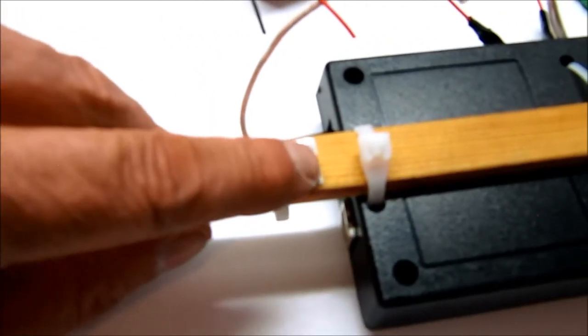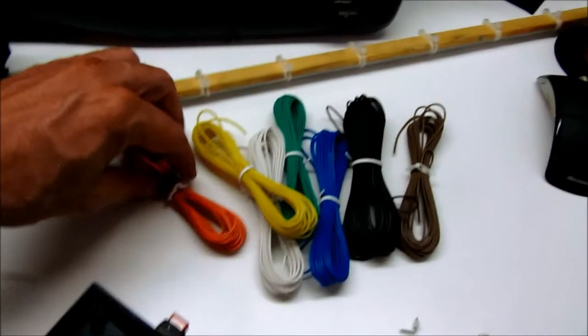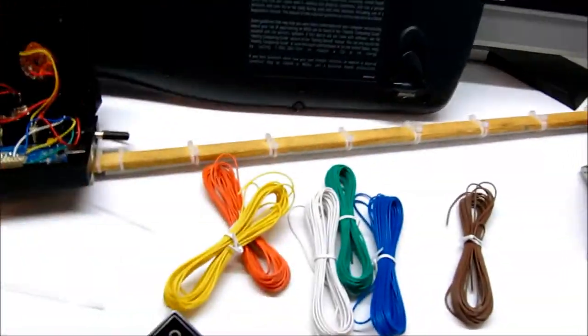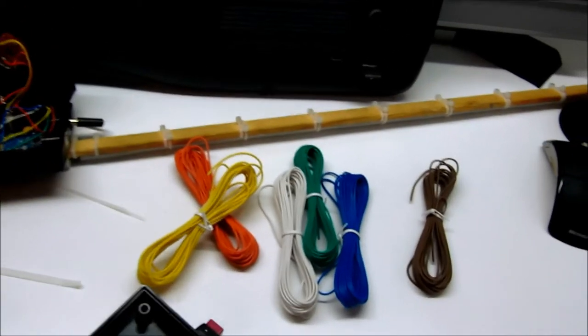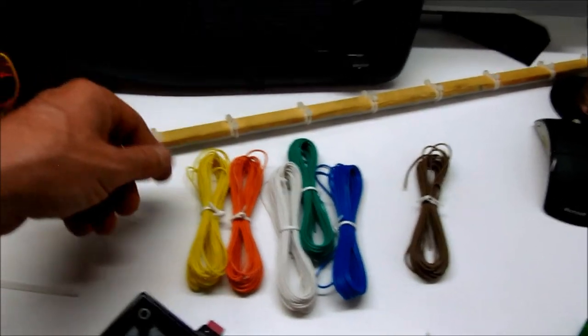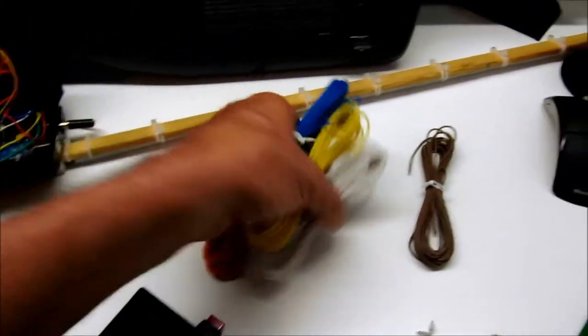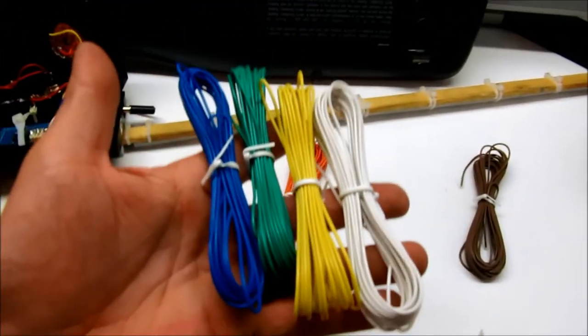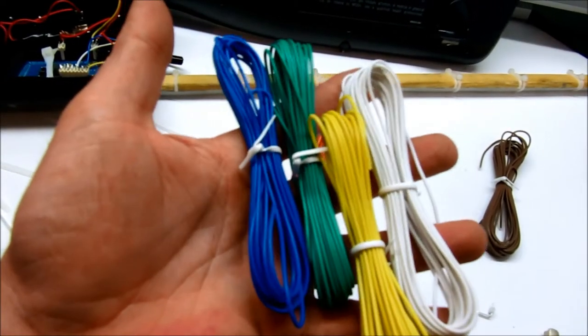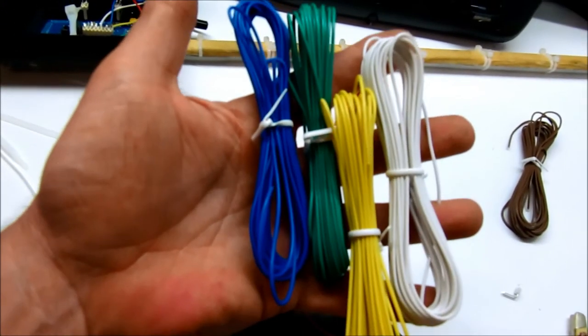I'm going to use six different colors here, but basically I'm going to make sure I use my black and red for the ground and my positive or plus side. And then I'll use four other colors here to help me keep track of which pin I'm using on the light strip, so that I'll know which pin it needs to connect to on the Arduino board.